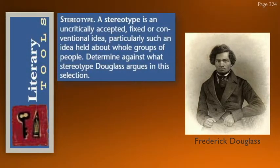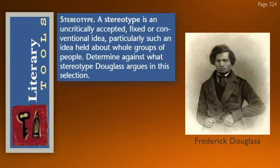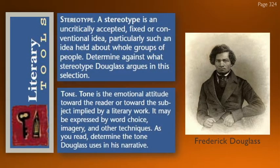Looking at the literary tools we'll focus on in this unit: first is stereotype. Most people think of stereotypes as having to do with race or culture, and indeed they generally are. But the simple definition of a stereotype is an overgeneralization — something may be true about an individual, and people tend to apply that truth to an entire group when it may not be true. We're going to look for stereotypes and Douglass's attempt to dispel them. The other tool is tone. Slavery is a very emotional issue, so we want to look at how Douglass uses and controls tone — the emotional attitude toward the reader or toward the subject. We can hear tone in people's voices.